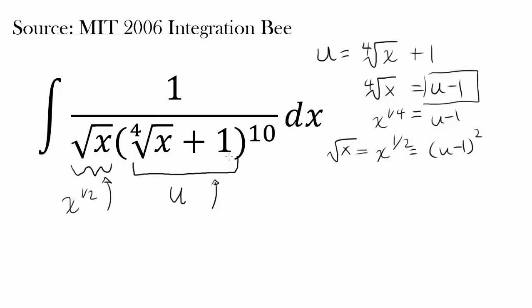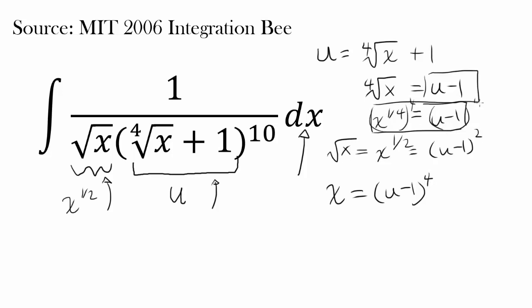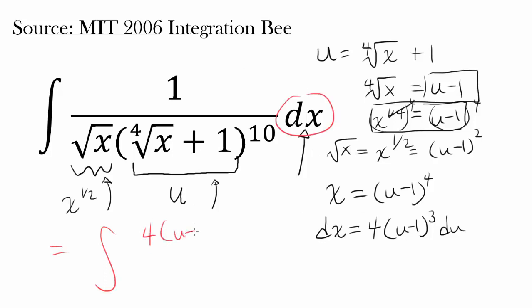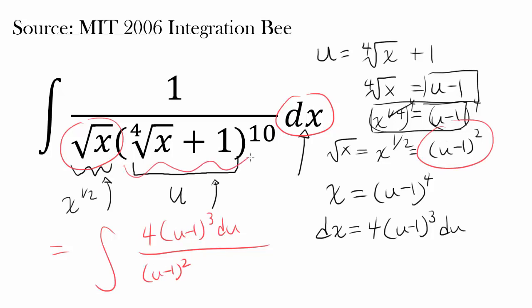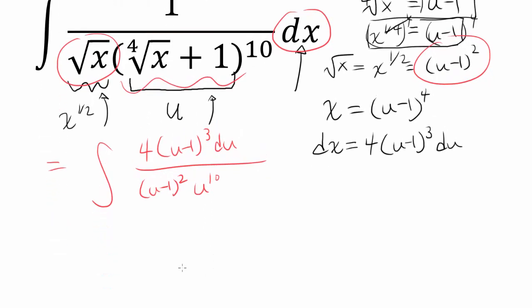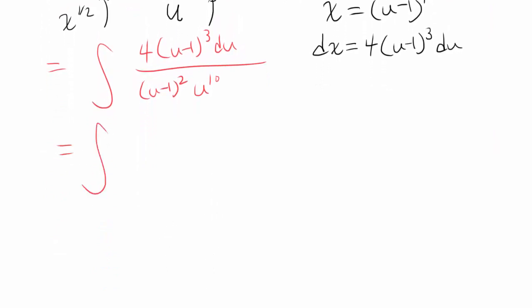This crazy expression is just u to the 10th power. So x is equal to u minus 1 raised to the 4th power — I'm just raising both sides of this equation to the 4th power. 1/4 and 4 cancel out, and you have u minus 1 to the 4th. Differentiating gets us dx equals 4 times u minus 1 cubed du. So let's make all these substitutions, and we see right away that things are going to cancel out, which is fantastic — you want things to cancel out in integration.